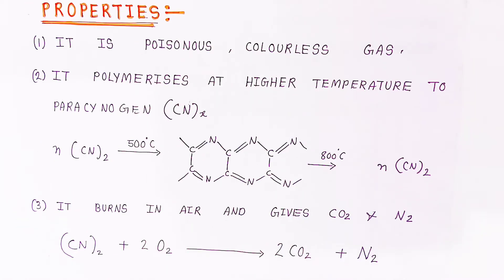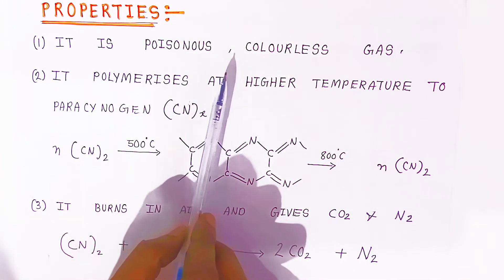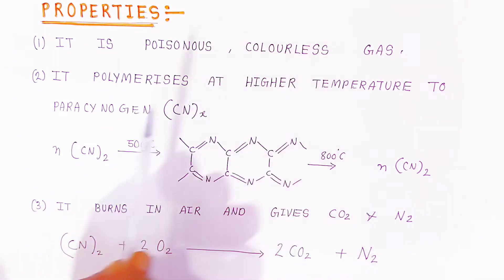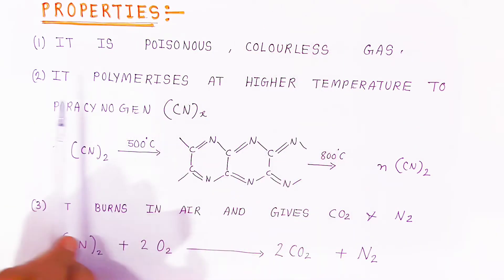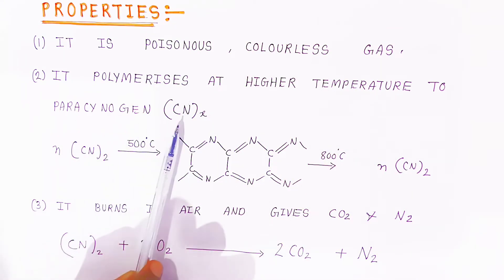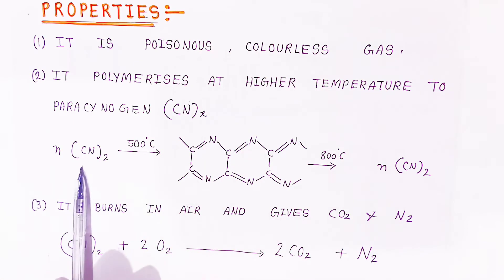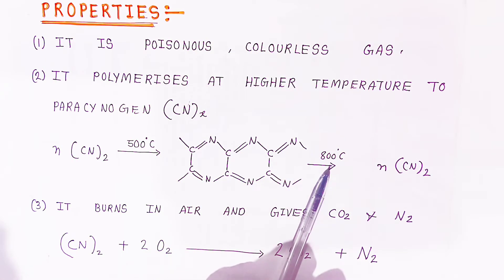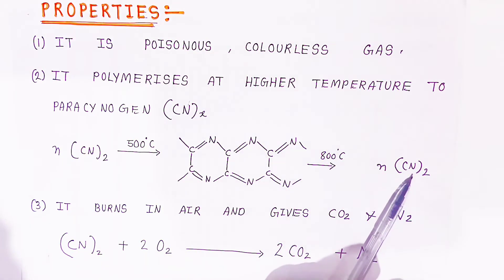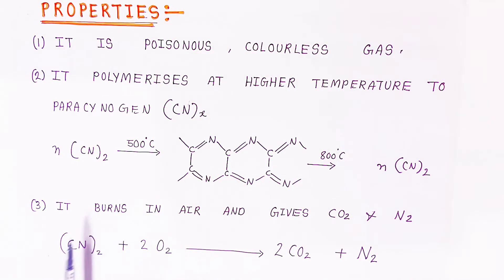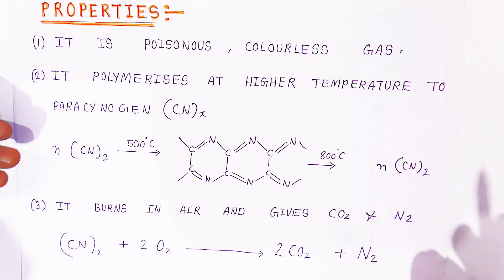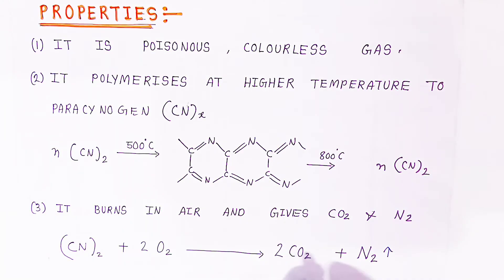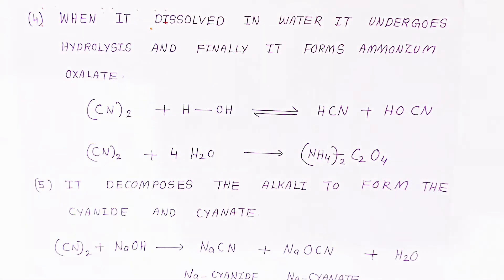Now let us see the properties of cyanogen. Cyanogen is a poisonous, colorless gas present in the gas state at room temperature. It polymerizes at higher temperatures to form paracyanogen. When heated to 500°C it forms an intermediate, and above 800°C it forms paracyanogen. When cyanogen burns in air in the presence of oxygen, it forms carbon dioxide gas and nitrogen gas.